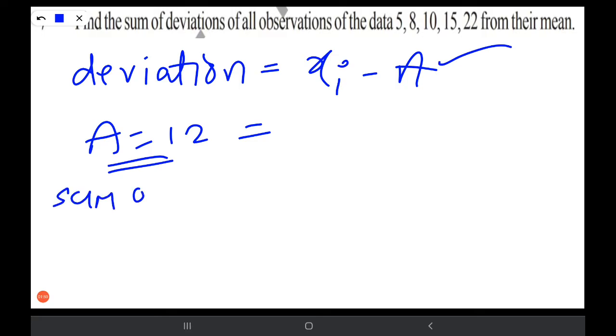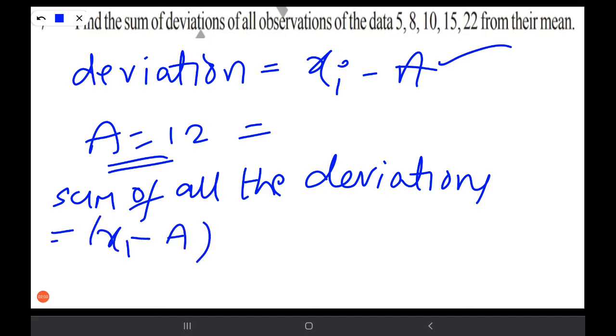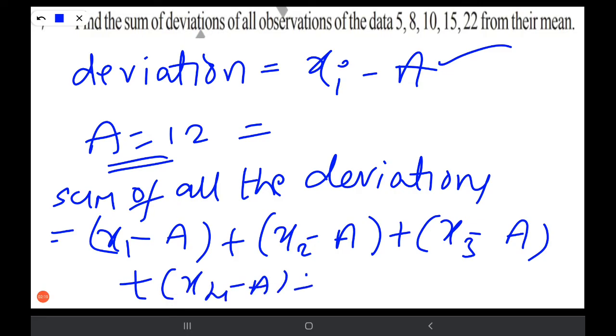Sum of all the deviations means X1 minus A plus X2 minus A plus X3 minus A plus X4 minus A plus X5 minus A. A value is fixed at 12. Let us substitute the values. I am erasing the screen.